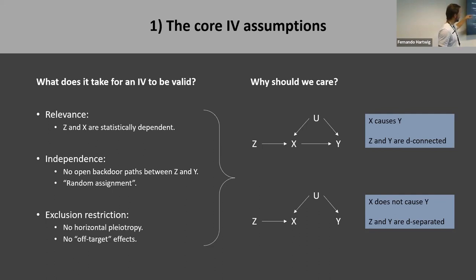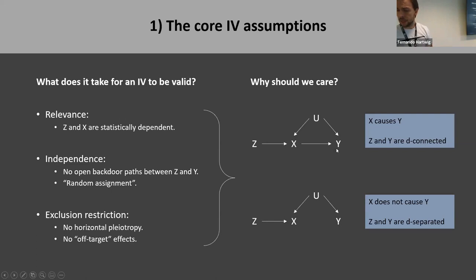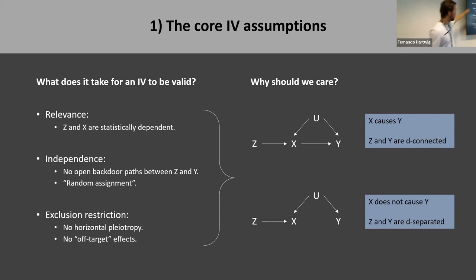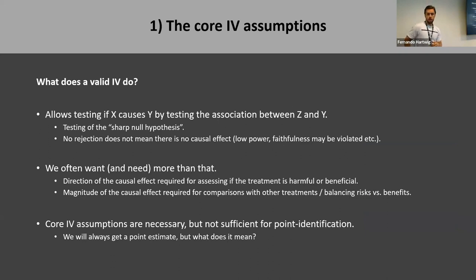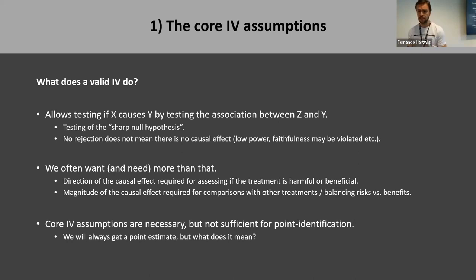Why do we care if Z meets those conditions? Because if Z meets those criteria, then Z is associated with Y only if X causes Y. So we can use the association between Z and Y as a means of studying causality in the association between X and Y — if those assumptions hold. This allows us to test if X causes Y by simply testing the association between Z and Y, which is good because all we can hope to do empirically is to test associations directly.